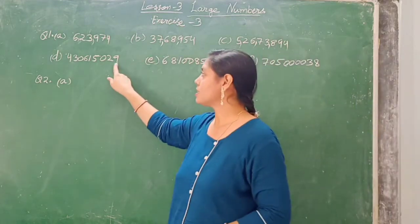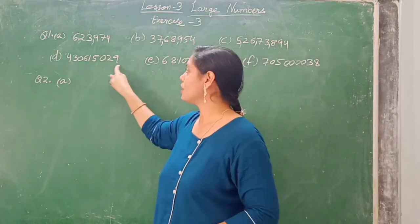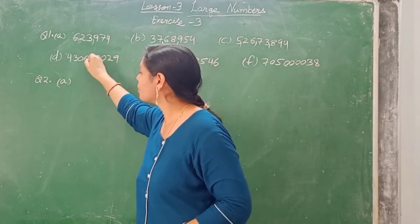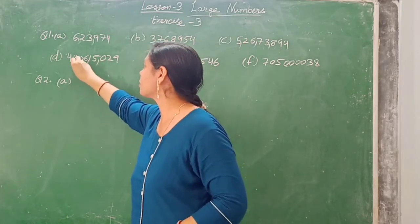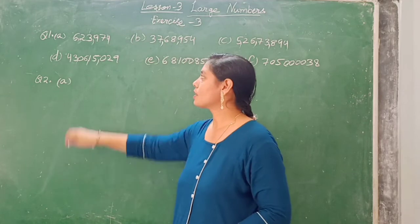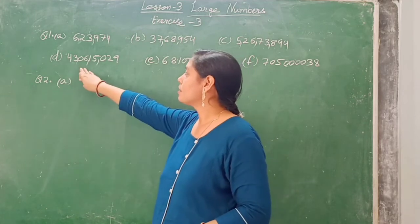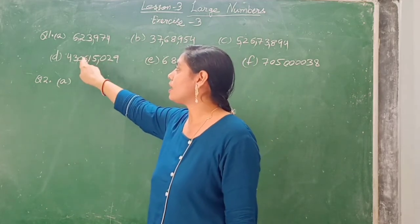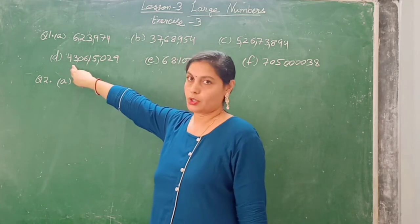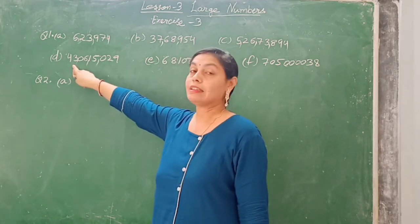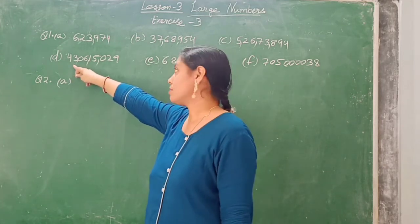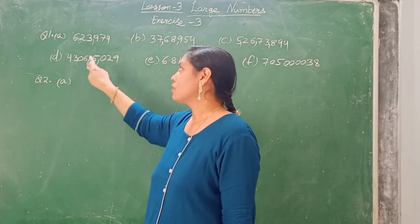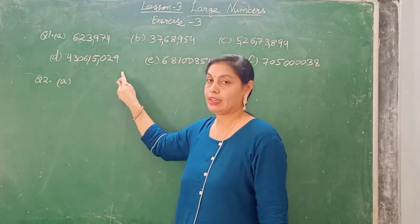Aisi hi karenge: three numbers ke baad comma, then two numbers ke baad comma, then two numbers ke baad comma. So: ones period, thousands period, lakhs period, and crore period. Toh 43 crore, 6 lakh, 15,029.